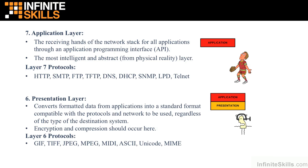The next layer down is the Presentation layer, Layer 6. This layer converts information coming down from the applications into a format compatible with the network. Here we perform encryption and compression, converting data from whatever format it's in into a format suitable for the network. We'll take a break here as we march through the OSI model, and pick up where we left off in the next video.